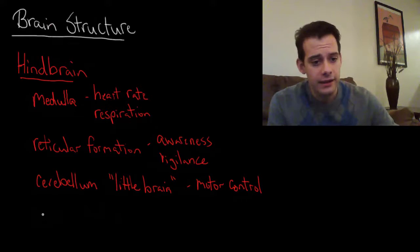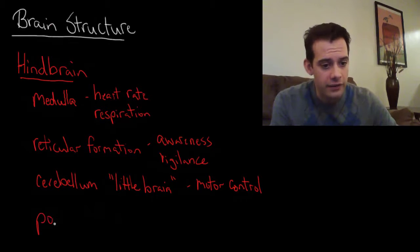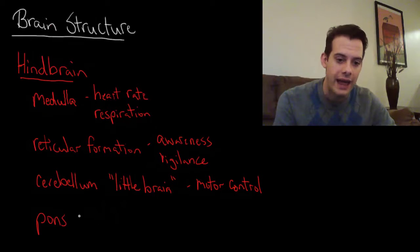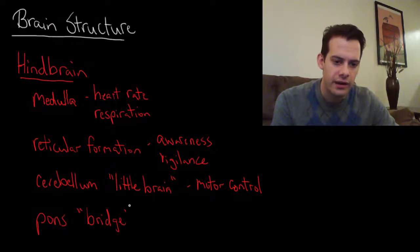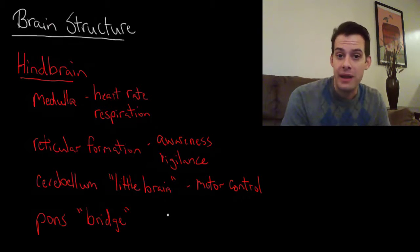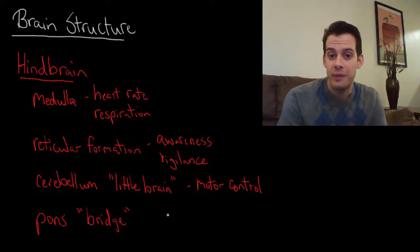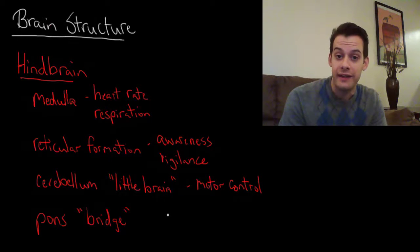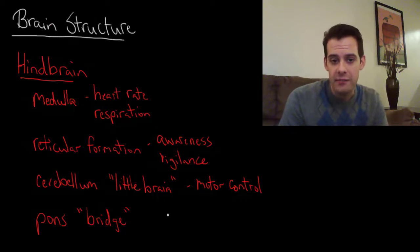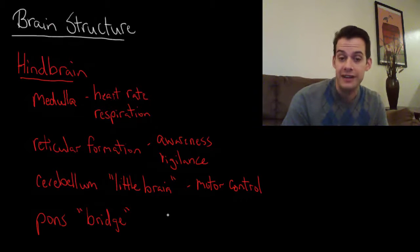And the last structure that we'll look at is the pons. And this is also a Latin term. And this is Latin for bridge. And you might be able to remember this if you know a Romance language like in Spanish you might know that bridge is puente. And that comes from the same Latin root. In French it would be pon. Or in Italian ponte. So that might help you to remember that pons is Latin for bridge. And the pons is the bridge between the brain stem and the cerebellum and the rest of the brain. So it serves to connect all of these areas.